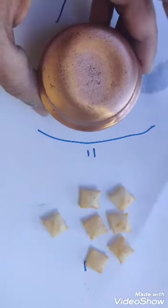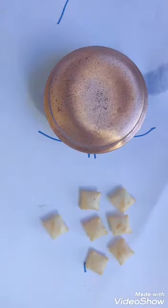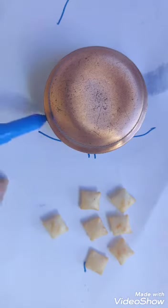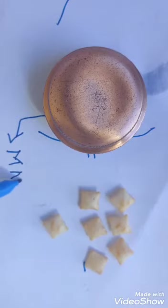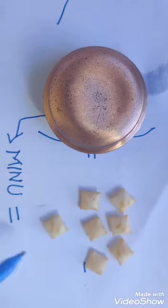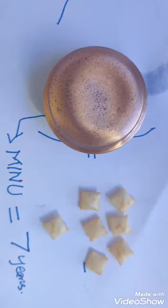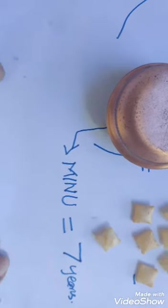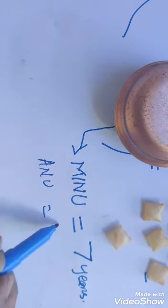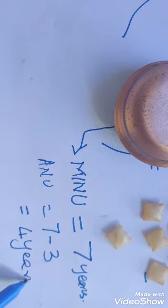The bottle cap's value is seven, and since the bottle cap represented Minu's age, Minu's current age is seven years old. And what about Anu? According to our question, Anu is three years younger than Minu. So Anu is seven minus three — Anu is four years old.